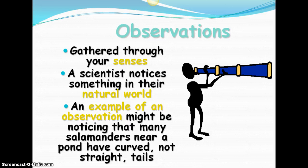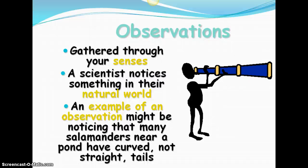So observations. If you're using your notes packet in class, you can fill this in in that little box for observations or step one. These are gathered through your senses. A scientist will notice something in the natural world. You are a scientist every day. You don't have to be called a scientist. You don't have to be educated necessarily to be a scientist. You are noticing things about your natural world around you all the time, and you are working through those things and sometimes asking questions, sometimes setting up some type of variable or experiment to see what will happen as a result of that particular thing. An example of an observation might be noticing that many salamanders near a pond have curved, not straight tails. So that is just strictly an observation. You're not giving any answer to why that might be happening. You are just looking at that particular trait or observation.